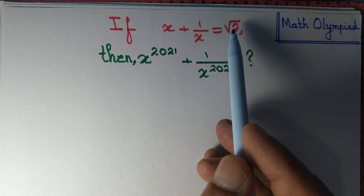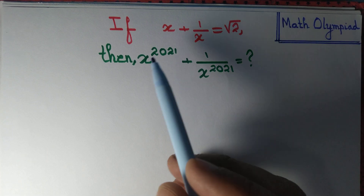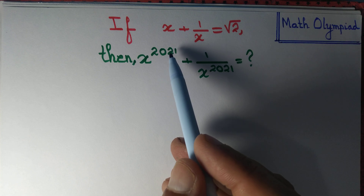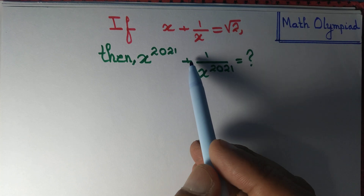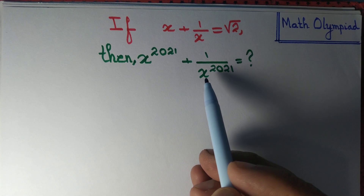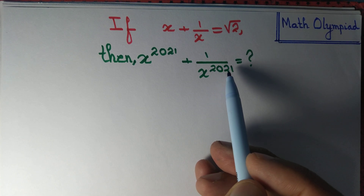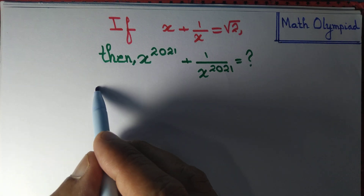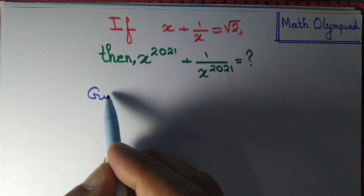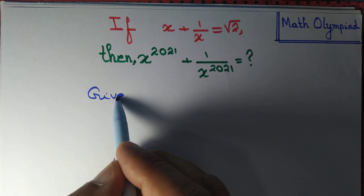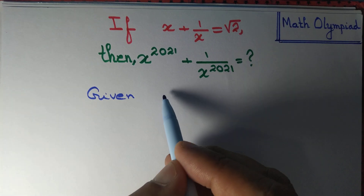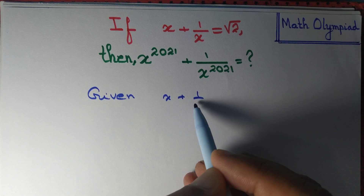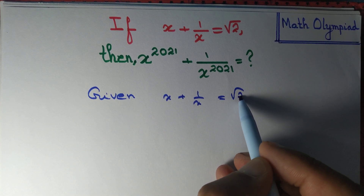Given x plus 1 by x equal to root 2, we want to find the value of x to the power 2021 plus 1 by x to the power 2021.